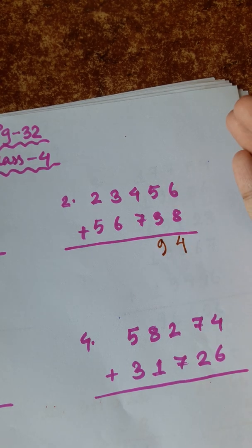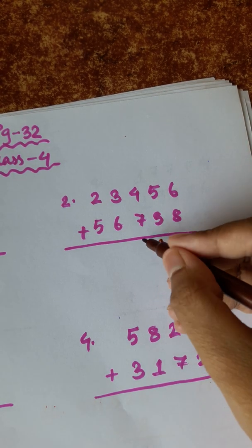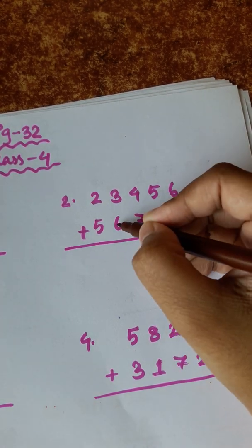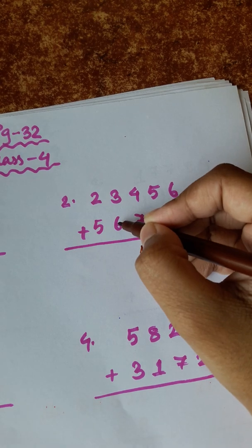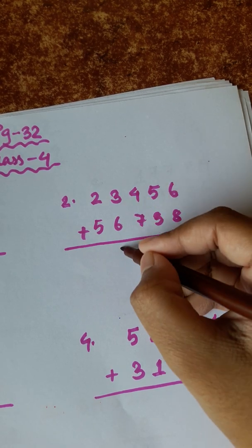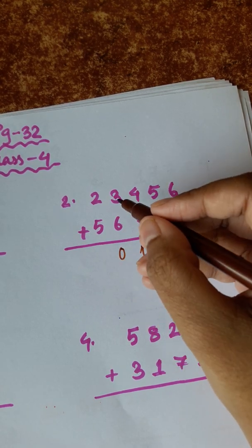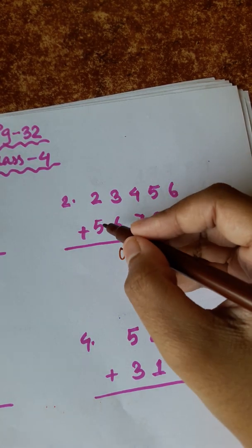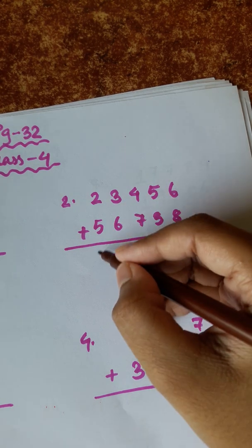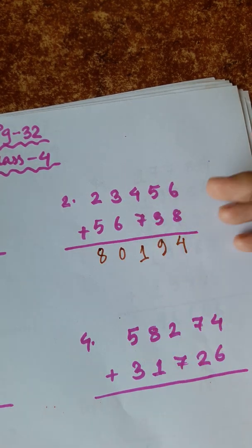7, 8, 9, 10, 11. 6 plus 1 is 7, plus 3 is 10. 7 plus 1 is 8. 5 and 1, 6 plus 2 is 8.